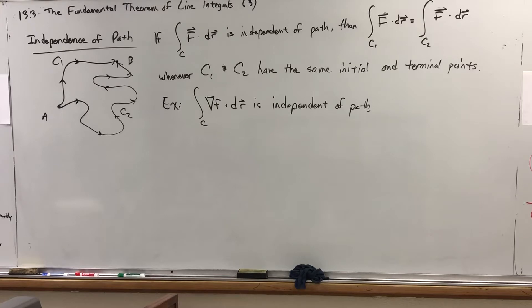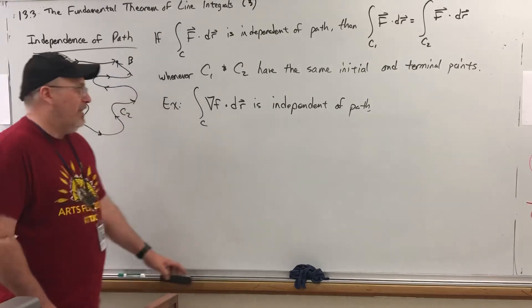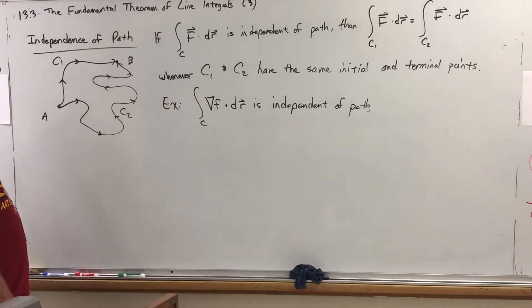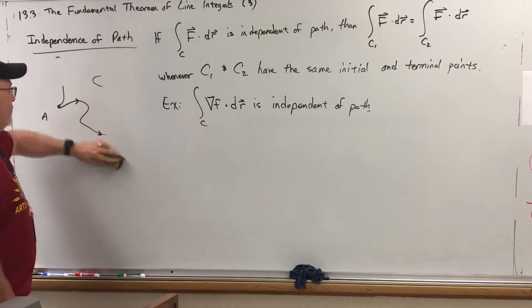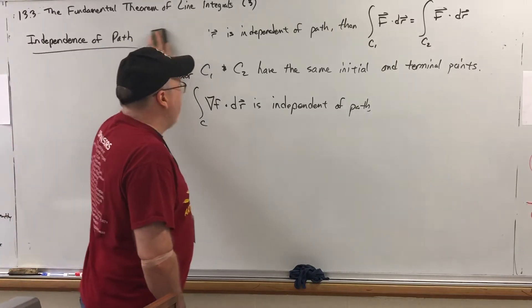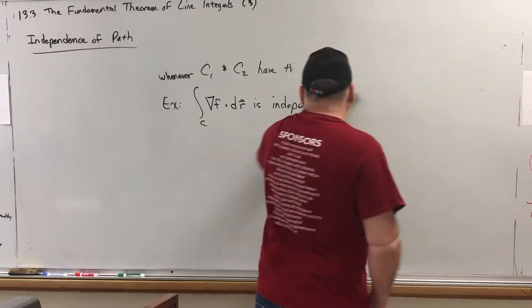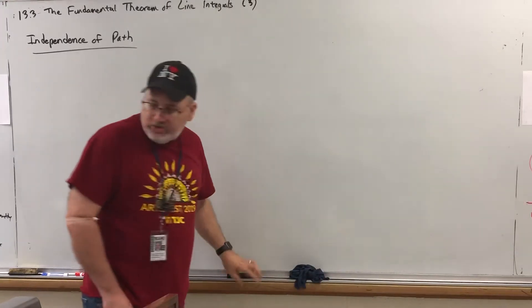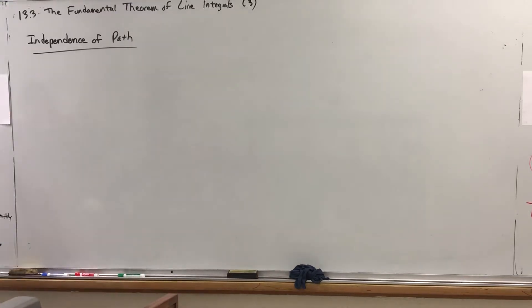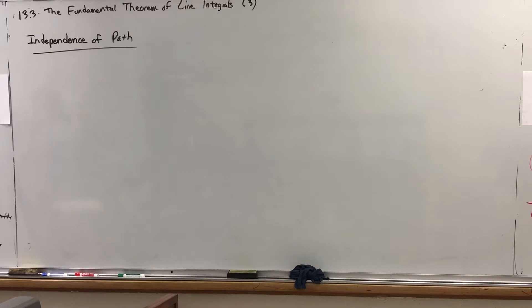Now, path independence actually has some pretty nifty implications. And, again, path independence just means that the line integral does not depend on the path, it only depends upon where you start and where you end. So, what can we say about a line integral when the curve is closed? And, what do I mean by a closed curve?